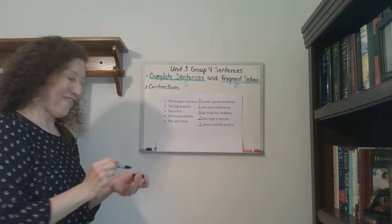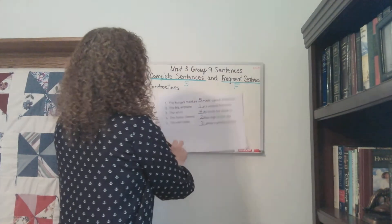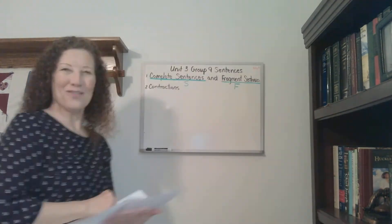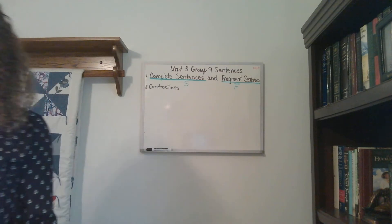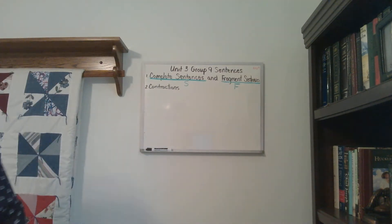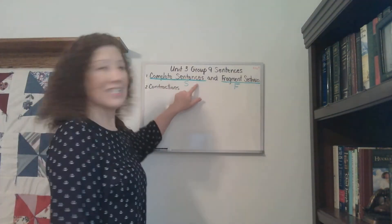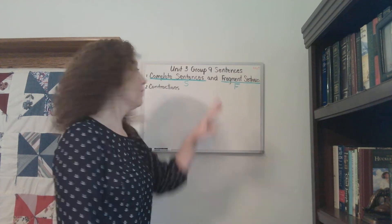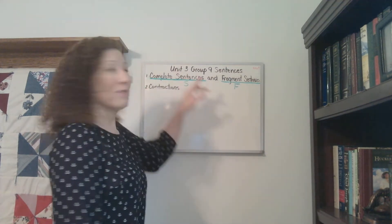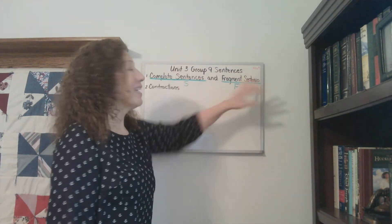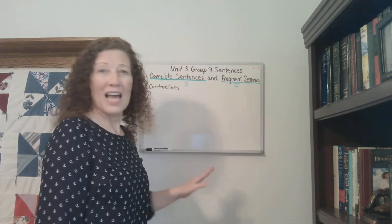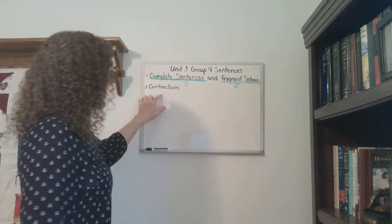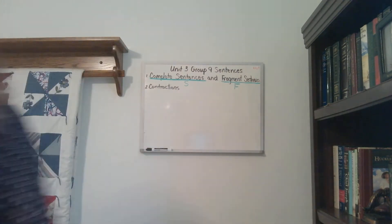Wasn't that fun? So you'll get to do that exercise in your book, and I think you'll really enjoy it. So remember, a complete sentence has to make sense, it has to have a subject, it has to have a verb, it has a capital letter and an end mark. A fragment sentence is not a complete thought and it doesn't make sense. Alright, let's look at our second thing: contractions.